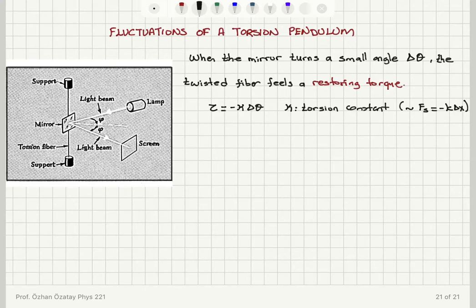So if we have fluctuations in the angle we can detect this by looking at the screen. We can see that the point where the beam is falling on the screen is changing.